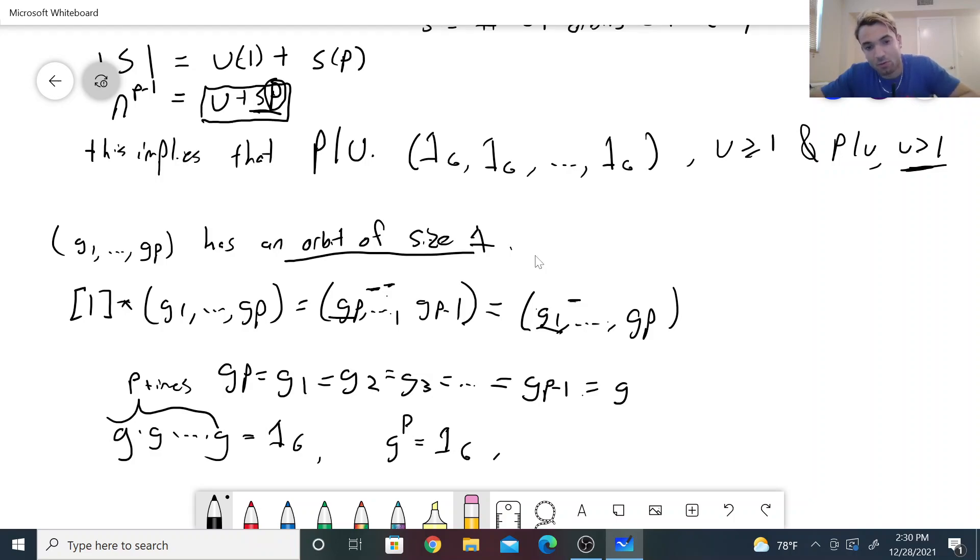Well, we know that from this it follows that the order of g must divide p, but p is a prime, and g is not the identity. So what number other than 1 divides p? Well, it's just p. So the order of g has to be equal to p. So this proves the result, showing the existence of an element of order p. It's a very nice proof and a pretty powerful result for group theory.